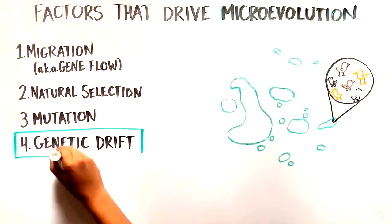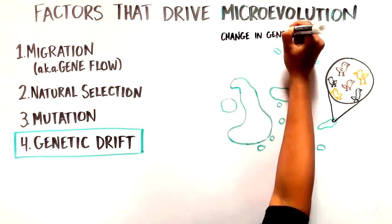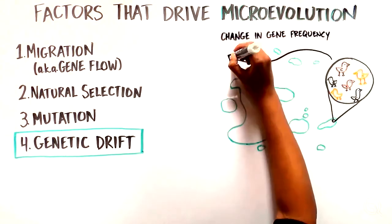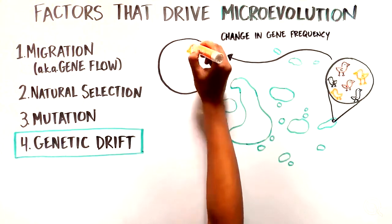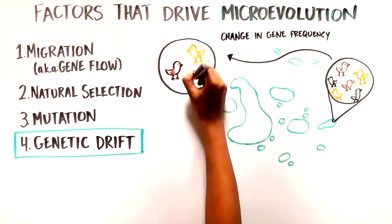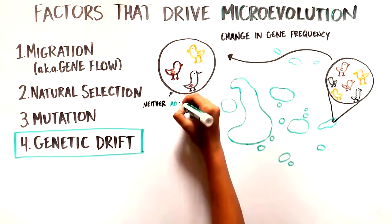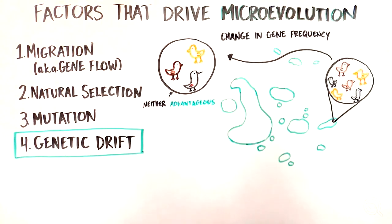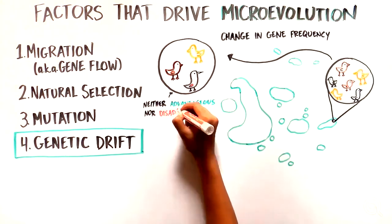And lastly, evolution can occur through random genetic drift, which refers to change in frequency of a gene variant in the population over time by chance, meaning that genetic drift does not take into account whether the gene variant is advantageous or disadvantageous.